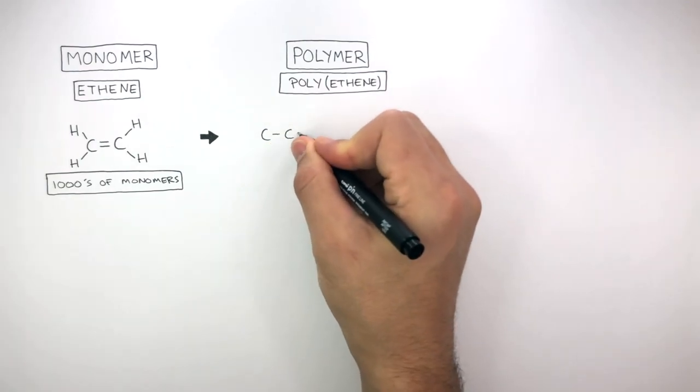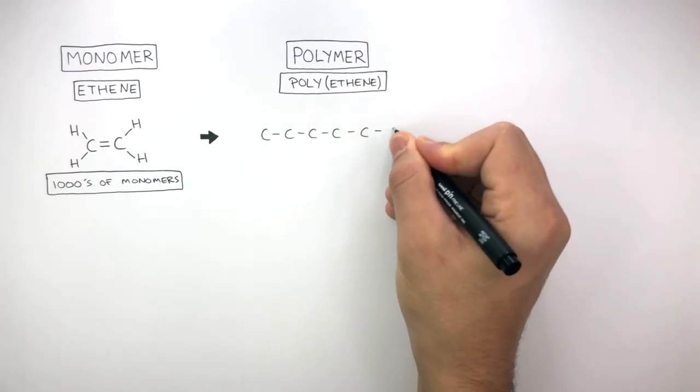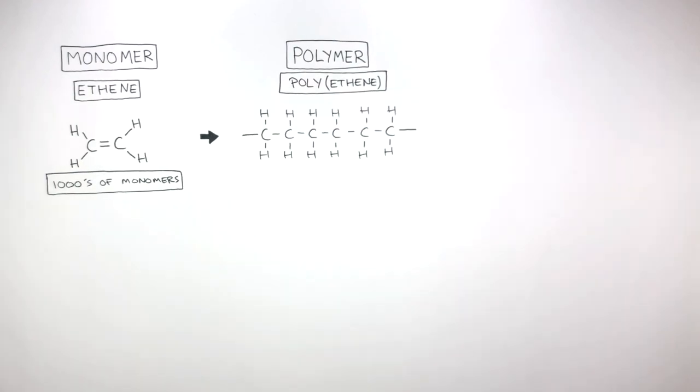Notice how there are now single covalent bonds between each carbon atom. And this shows a small section of the long chain of polyethene.